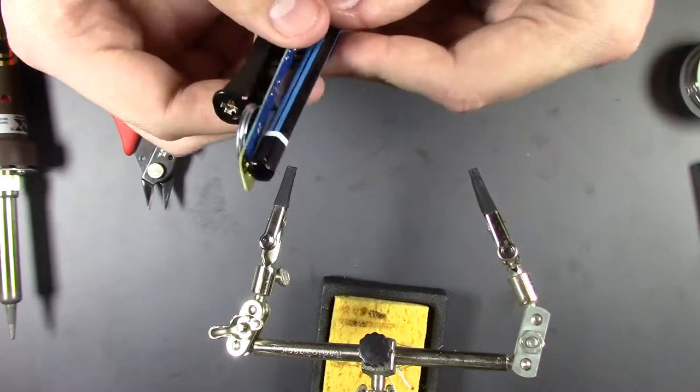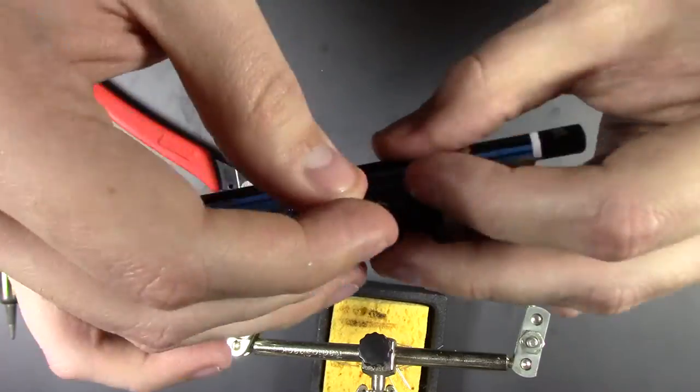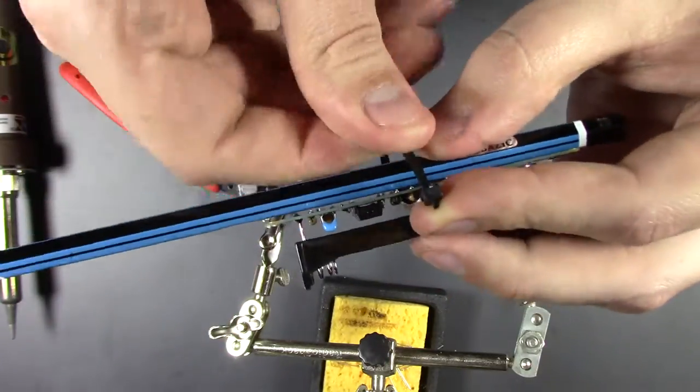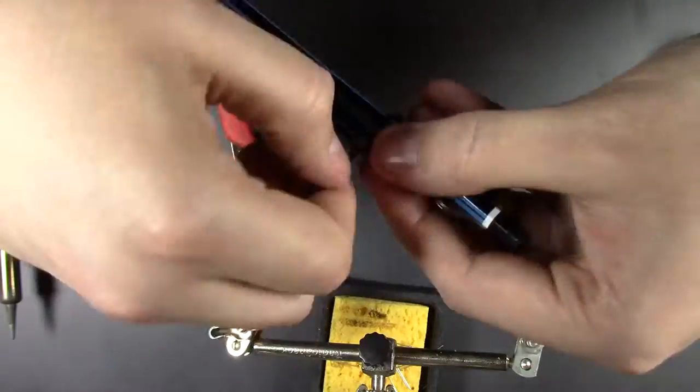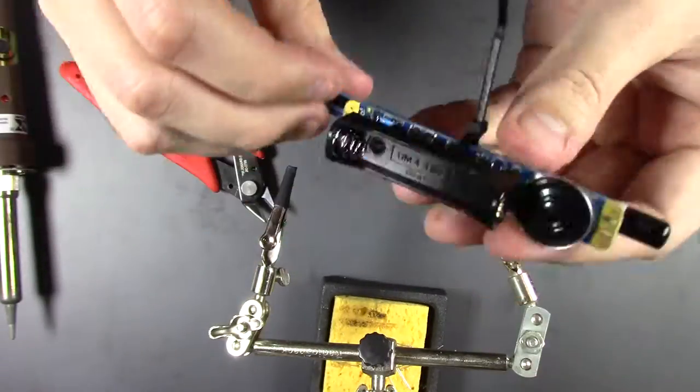Now it's time to attach it to the pencil. The kit comes with a little zip tie that you use to just wrap around the pencil and the PCB, and then get it tight but not too tight. You don't want to hurt any of the components.